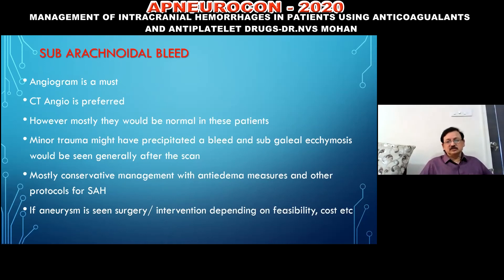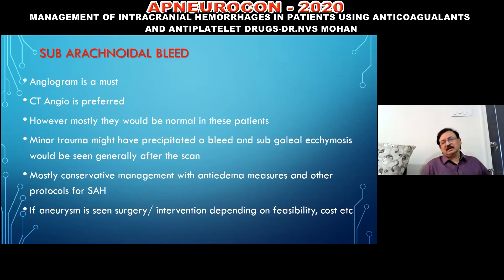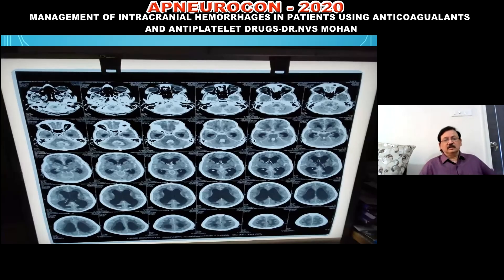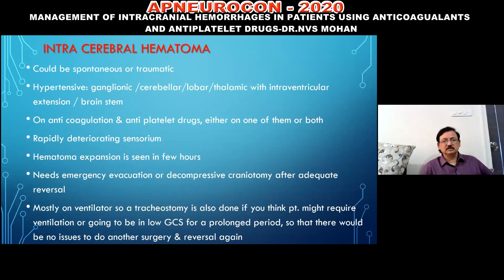For subarachnoid hemorrhage, angiogram is a must—CTA is preferred. However, angiograms are often normal in these patients, as it may be a traumatic SAH from a minor forgotten injury. Once CT scan findings are noted, subgaleal ecchymosis may then be found on examination. Always perform angiogram to rule out an aneurysm. If aneurysms are detected, surgery or endovascular intervention is required depending on feasibility and patient choice. A case example showed SAH with intraventricular extension managed with EVD, converted to Ommaya reservoir, with a shunt placed later.